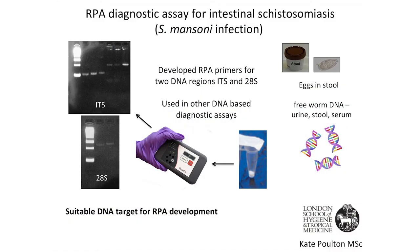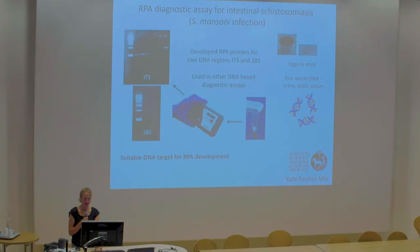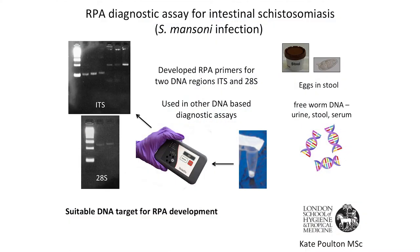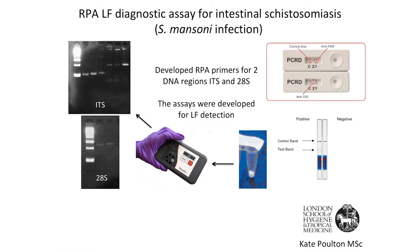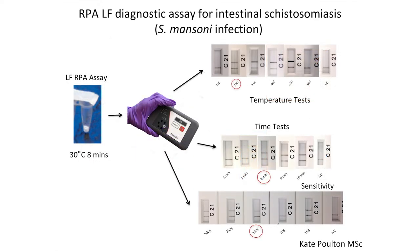We've also looked at S. mansoni, the intestinal form. This is more tricky because we're dealing with stool samples, which are much more difficult to extract DNA from with more logistics involved. We've developed an assay based on two DNA targets and ran these in our portable machines using the lateral flow system. We can get assays running at 30 degrees within eight minutes and down to 10 femtograms of DNA. So there is promise with mansoni, but a lot more work to do.